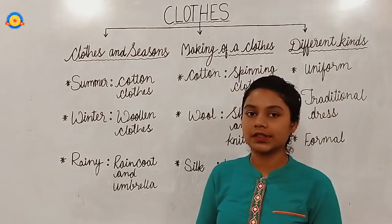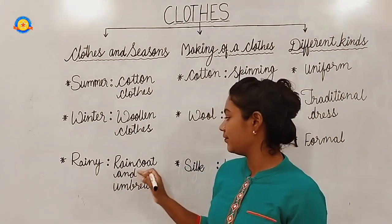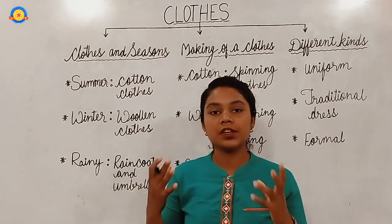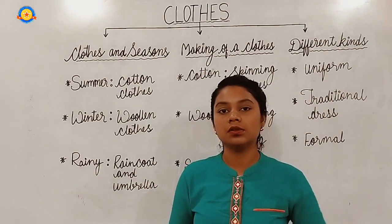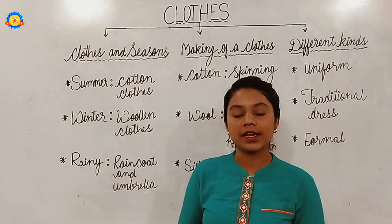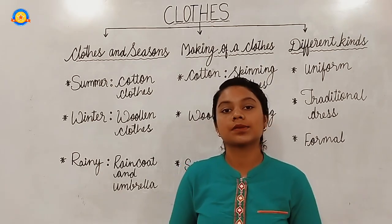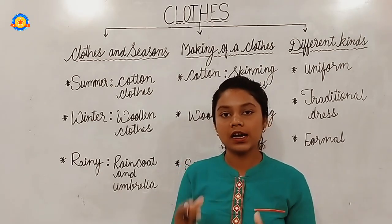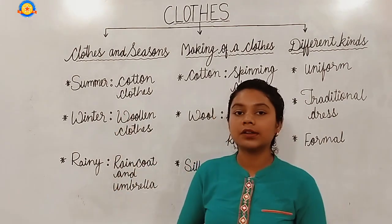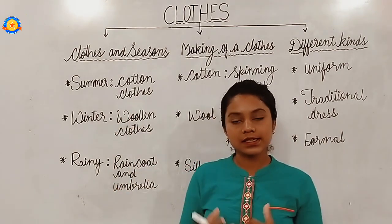Next, we have the rainy season. During the rainy season, we use a raincoat and umbrella. We use the raincoat to keep us dry, and we use the umbrella to protect ourselves from the rain. This was about the clothes which we wear in different seasons.